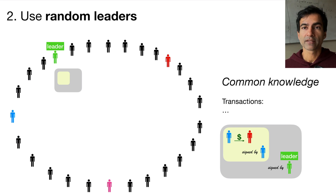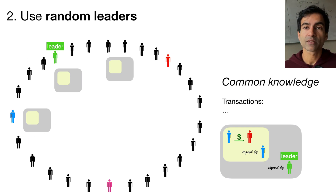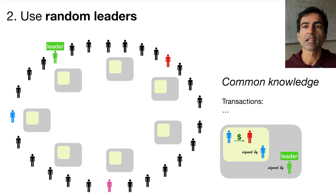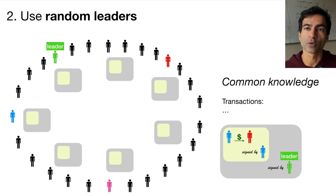Once they generate this signed addition to the common knowledge, they'll distribute it to everybody that they know. Everyone else will see that the leader has picked the next transaction to be added to the common knowledge and will help spread it around to everyone else, until everyone hears about this next transaction.